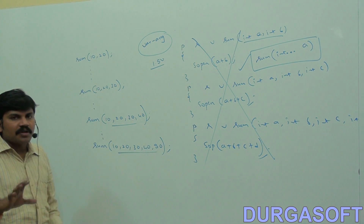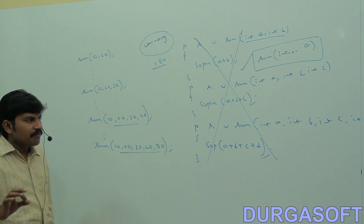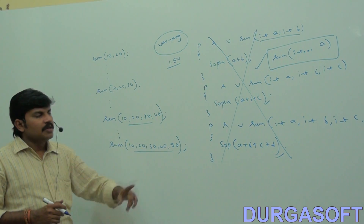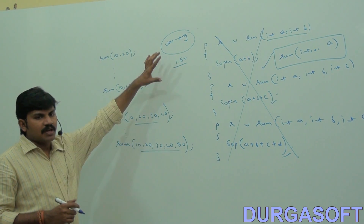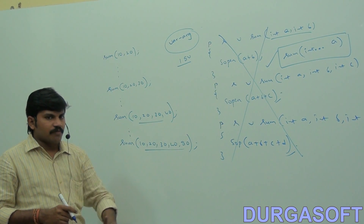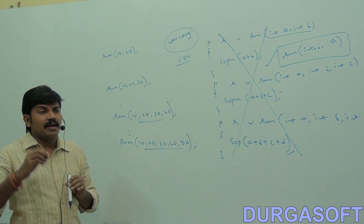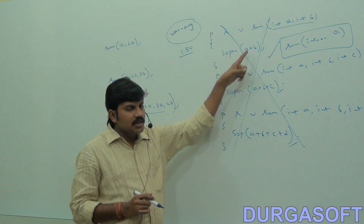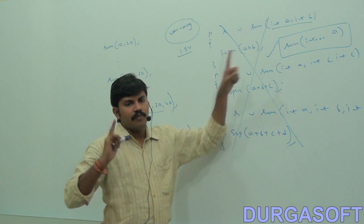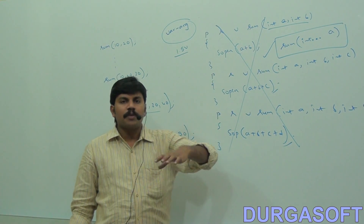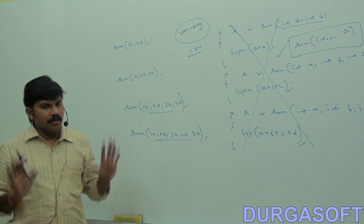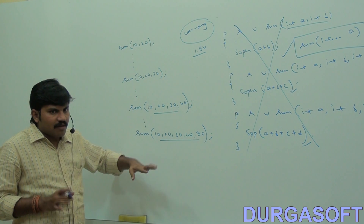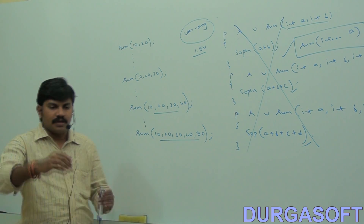A varargs method is one that can take a variable number of arguments. It came in Java 1.5 version. The advantage of varargs is that we are not required to declare multiple methods — we can declare only one method. The length of the code is going to be reduced and the quality of the code is going to be improved.